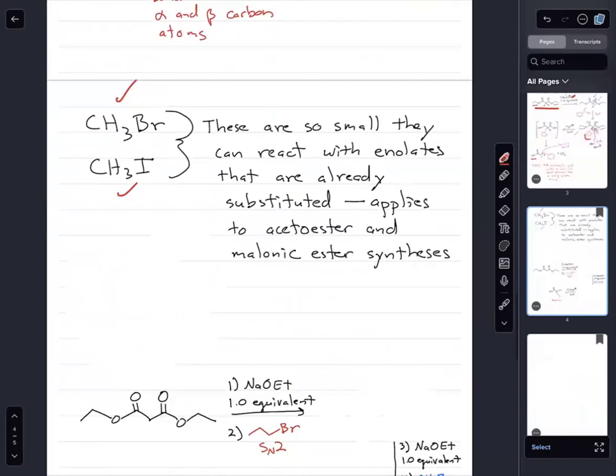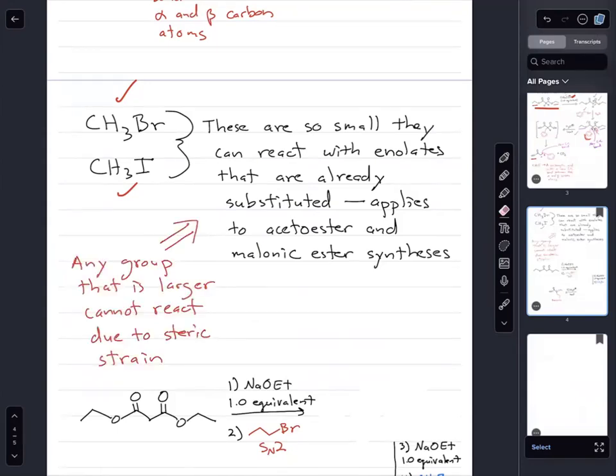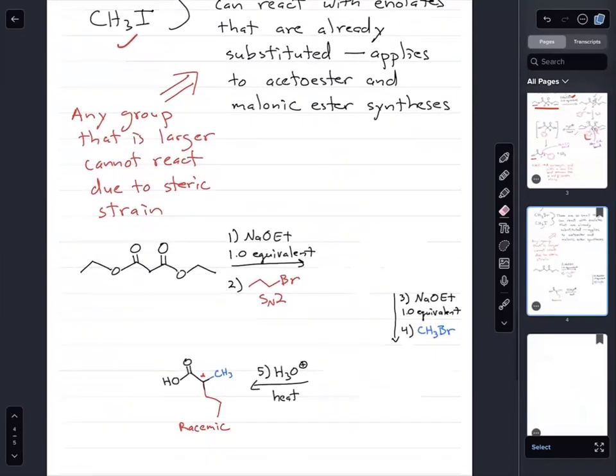So why is it that only these small ones are going to be applied in a second alkylation reaction with either acetoester or malonic ester? Is it because of the steric strain? A hundred percent. Any group that's larger than methyl is going to be too large and there's going to be too much steric strain and it won't react.